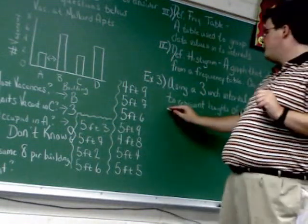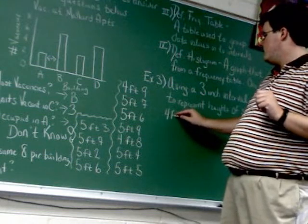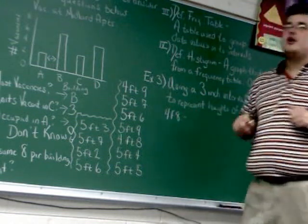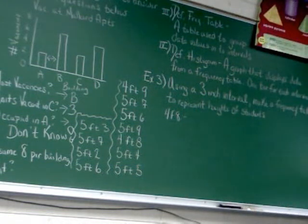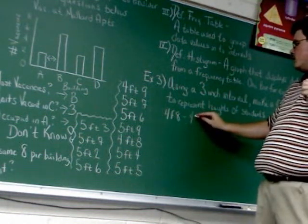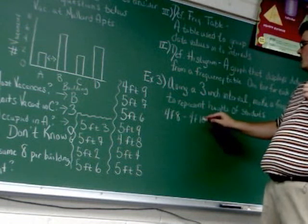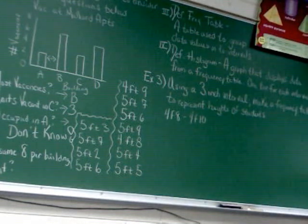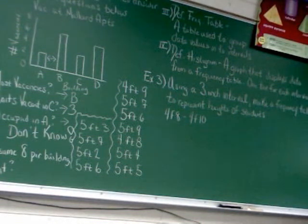So, if we start with four foot eight, a three-inch interval would have four foot eight, four foot nine, and four foot ten.